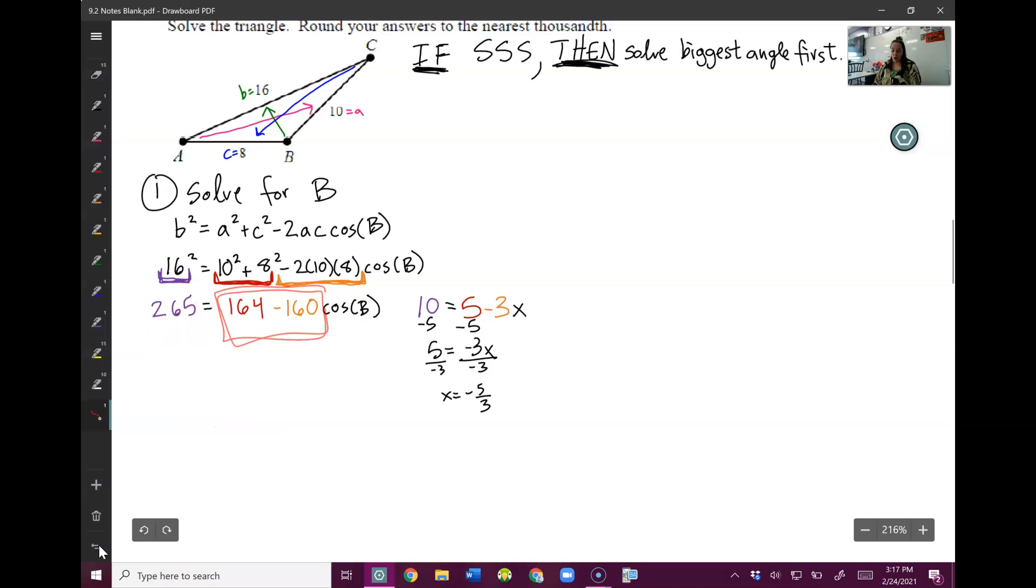So if I look at this one, you would subtract 5 first to get 5 equals negative 3x, and then divide by negative 3 to get your answer. Same process over here. Do not subtract those. You're going to start by subtracting the red one. So minus 164 to both sides. And we get 265 minus 164 is 101. And actually guys, I just realized I made a small mistake. 16 squared is not 265. That is 256. My bad. Anyway, 256 minus 164, that's 92.